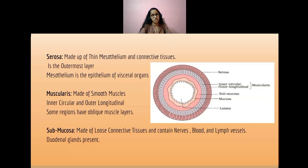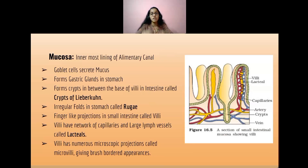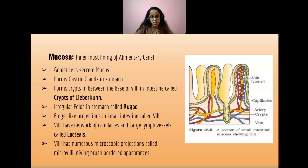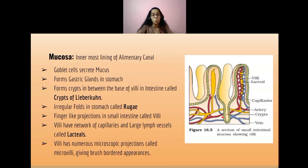The mucosa is the innermost lining of the alimentary canal. Goblet cells are present here, which secrete mucus. It also has gastric glands in the stomach region and forms crypts between the base of the villi, called the crypts of Lieberkühn. The irregular folds in the stomach of the mucosal layer are called rugae.